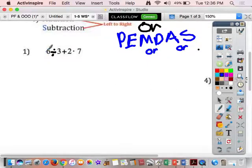Alright, so the first thing I'm going to do is I'm going to go across and ask, do I have any parentheses? No. Do I have any exponents? No. Do I have any multiplication or division? Yes, and I'm going to go left to right.